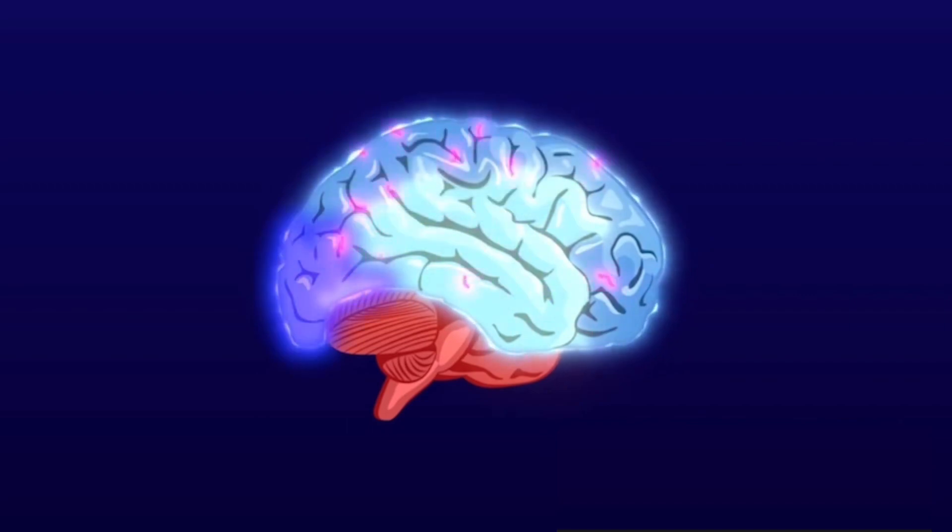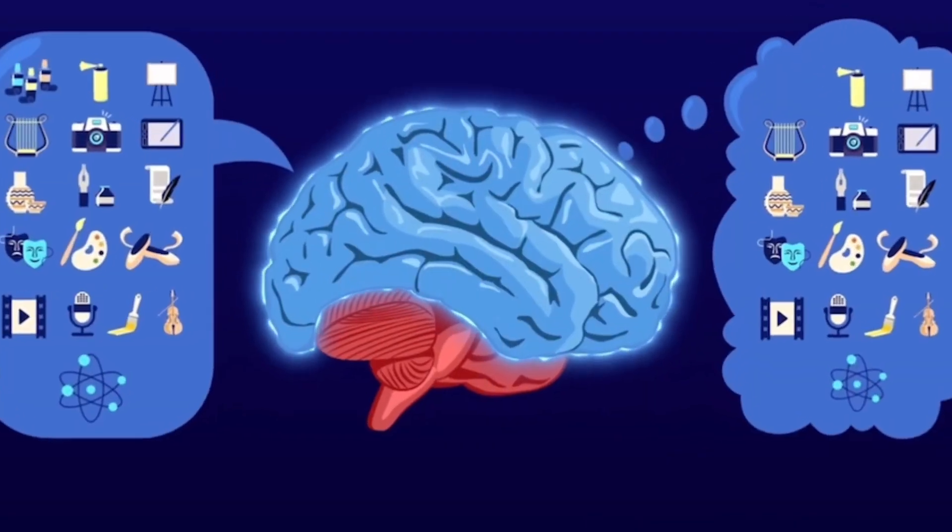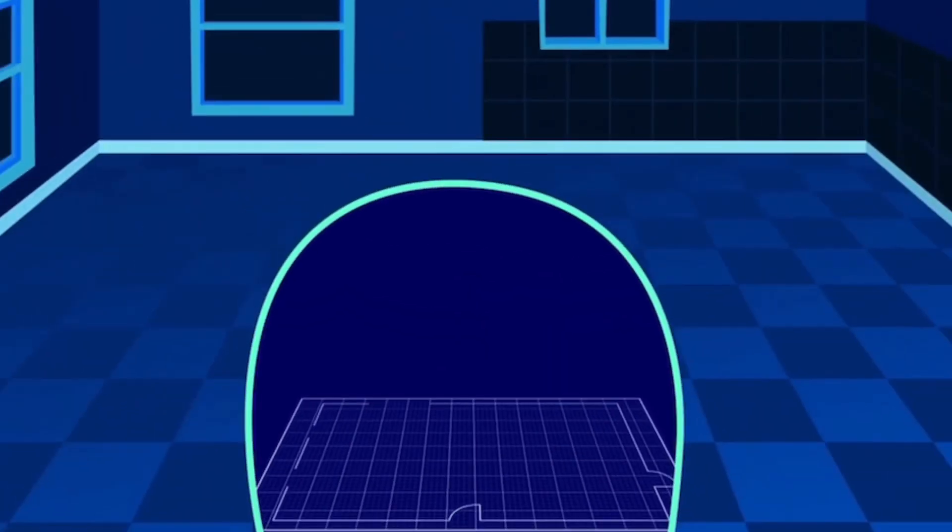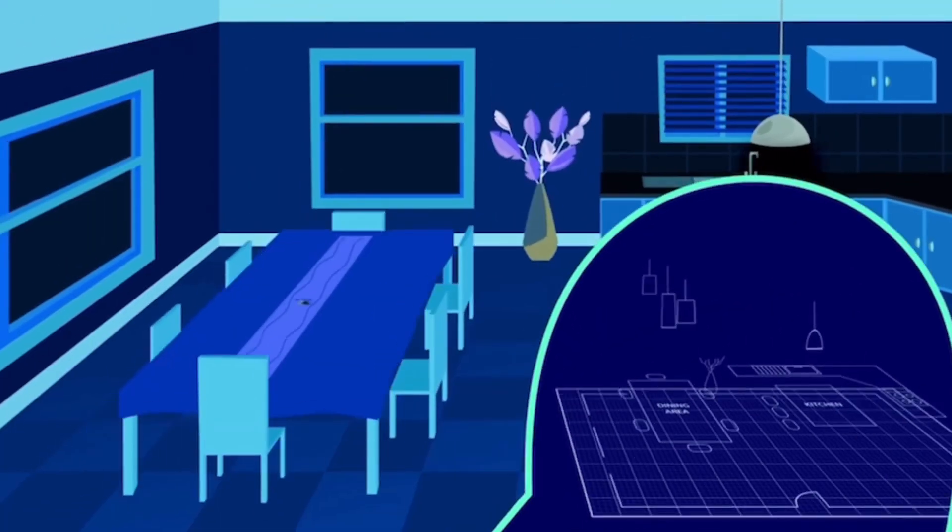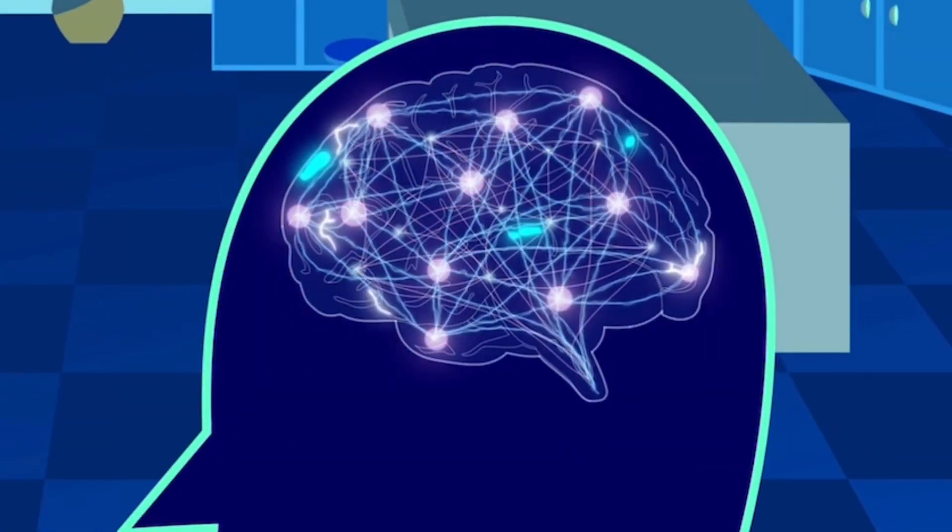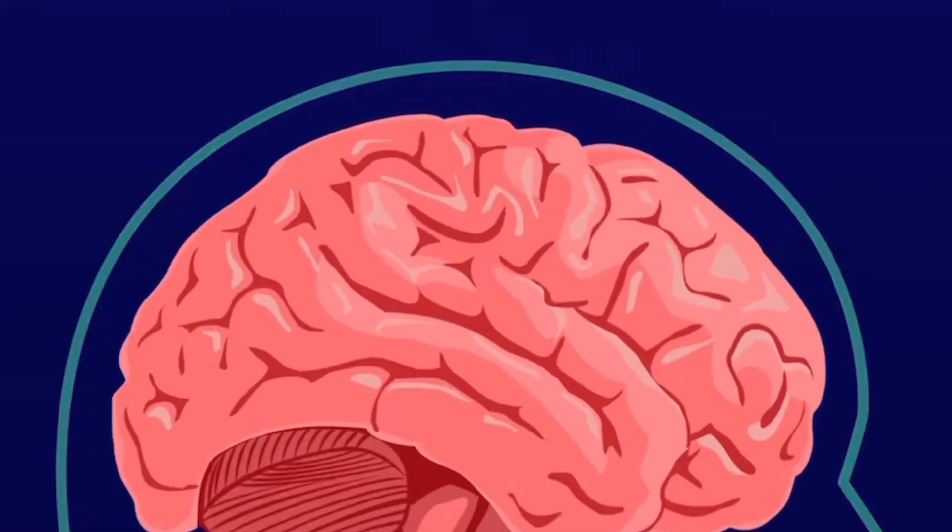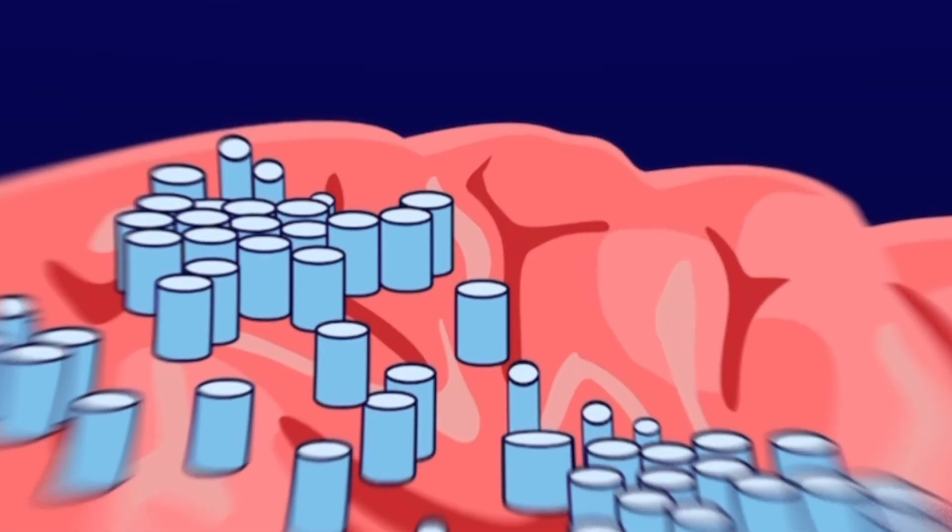Evidence indicates that as we sense our environments, our neocortex receives signals from our sensory inputs that allow us to build models of our surroundings. Our neocortex consists of about 150,000 cortical columns, each containing hundreds of mini-columns filled with hundreds of neurons.